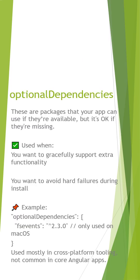Optional dependencies are like things your app can use if they are available, but it's okay if they are missing. So you want to gracefully support extra functionality. These are optional dependencies — they are not required.